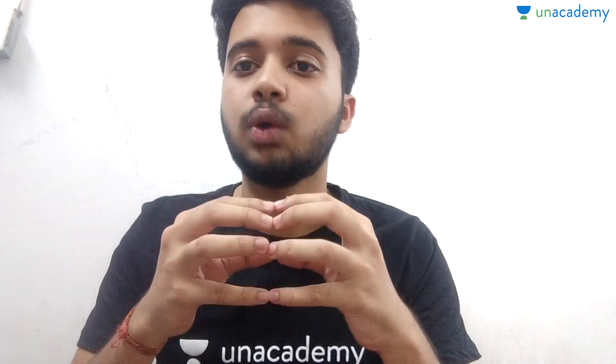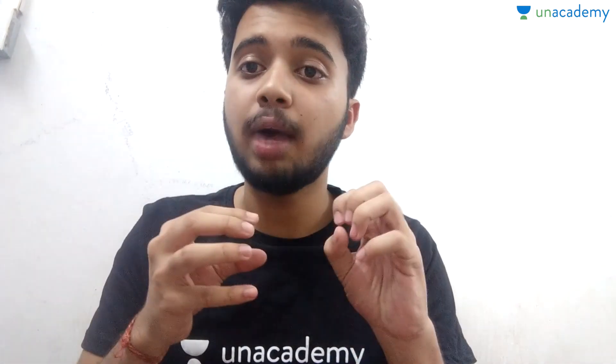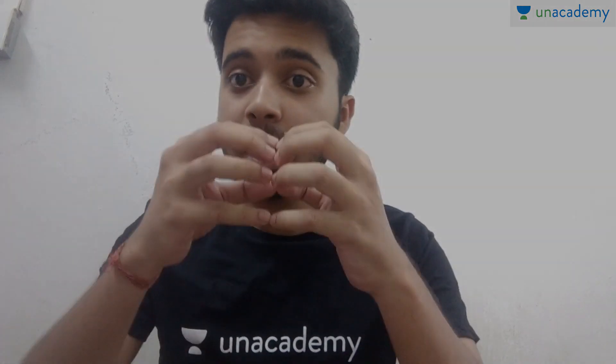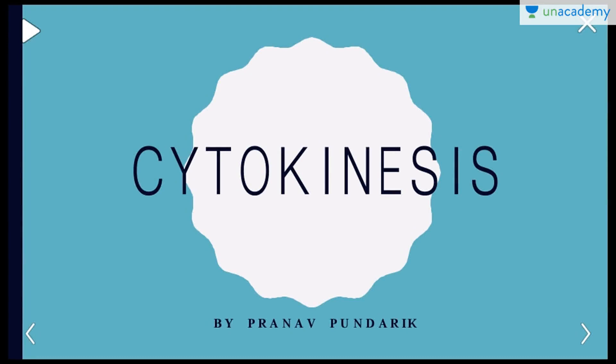Hey guys, welcome to this particular lesson. We just discussed karyokinesis — I think you are very clear about what karyokinesis is. We left the cell at a particular stage where nuclear division is complete: the nuclear region has split into two separate parts. Now what remains is the cell, and it needs to divide into two daughter cells. In this lesson we are going to discuss cytoplasmic division in plant and animal cells. Let's begin and have a look at cytokinesis.